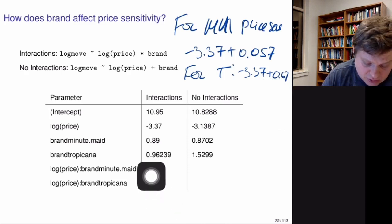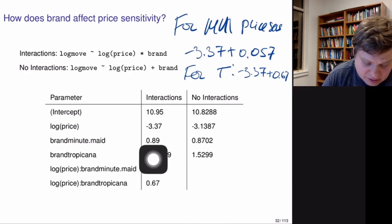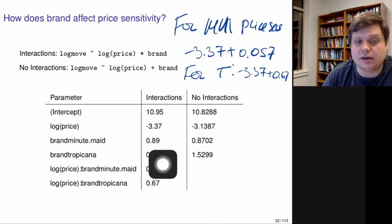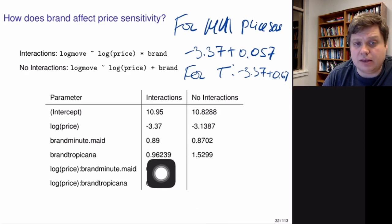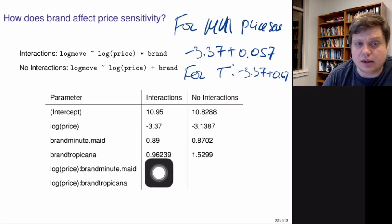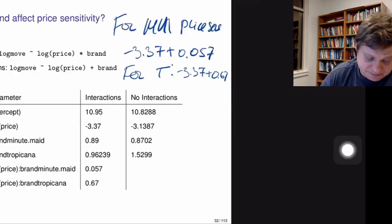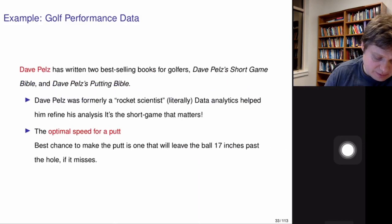We can look at the main effects of Tropicana and Minute Maid brands. From the previous model we already saw that Minute Maid and Tropicana customers lead to larger sales compared to Dominic's.